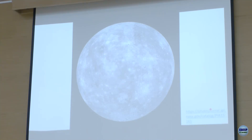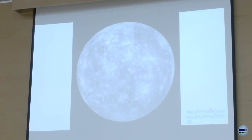The NASA Photojournal website is very interesting — I've put the link here. You can find images of all kinds of solar system bodies there. You can search by planet and find whatever you're looking for. It's a very exciting website if you're interested.